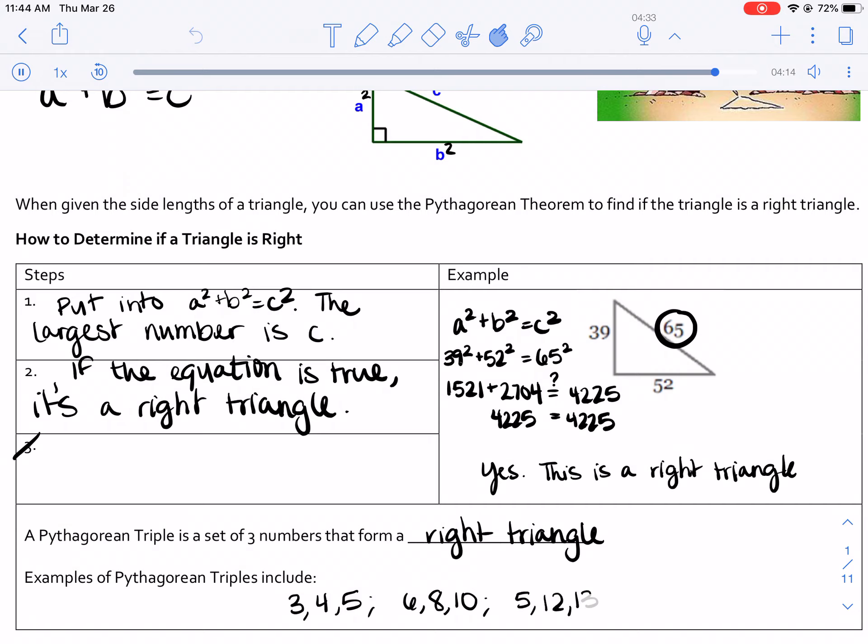So it might be helpful for you when you're preparing to take your test to memorize a couple of these. Like 3, 4, 5 is a really good one. It's always used. And that way you can just recognize, oh, that's a 3, 4, 5 triangle. It's a right triangle.